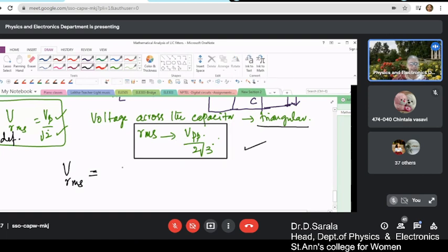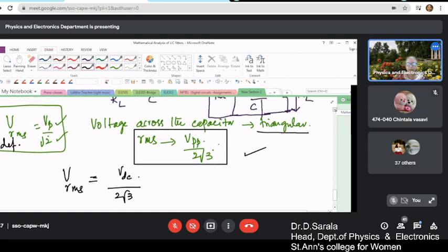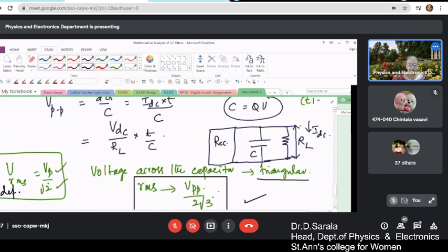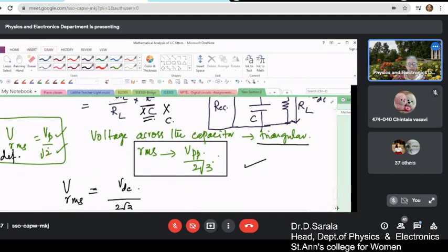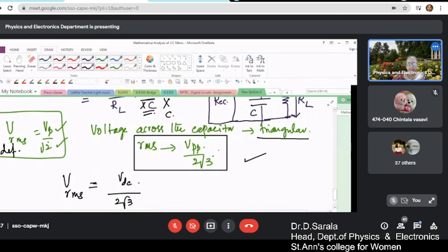Then it will be v_dc by 2√3, 2√3, this is x of c. There is a print mistake in your textbook. Correct it. It is x_c. So this is a print of x_c also.